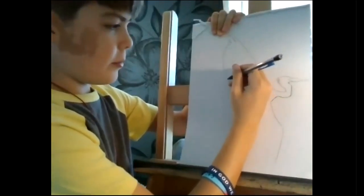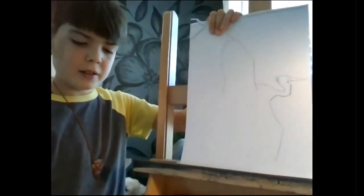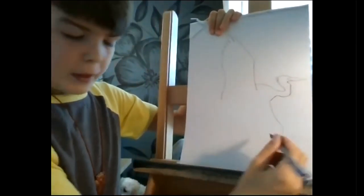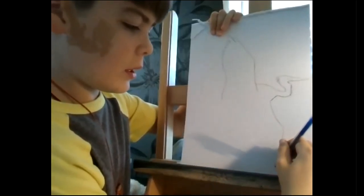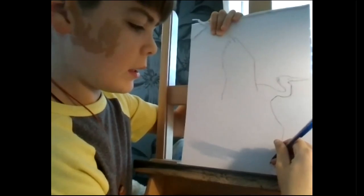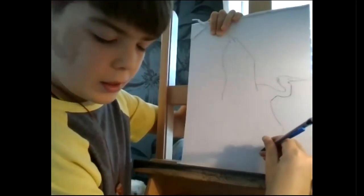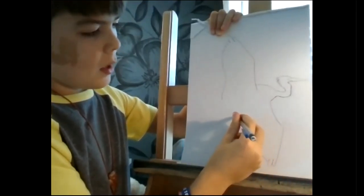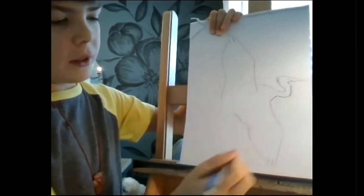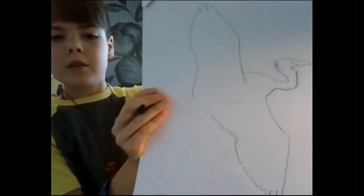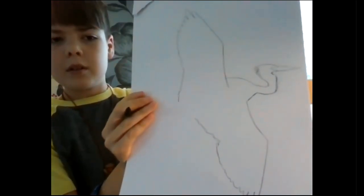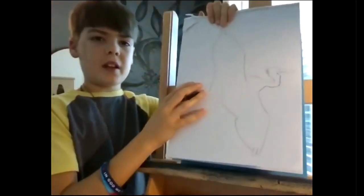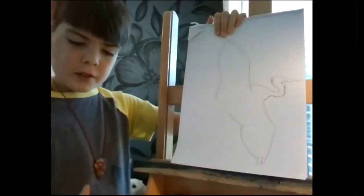Now we're going to go back out a little bit with those bumpy lines to about right there. Now we're going to do the same steps for this wing. We're going to do that feather, the bump, then a taller feather, and then those bumpy lines and the feathers that go up.